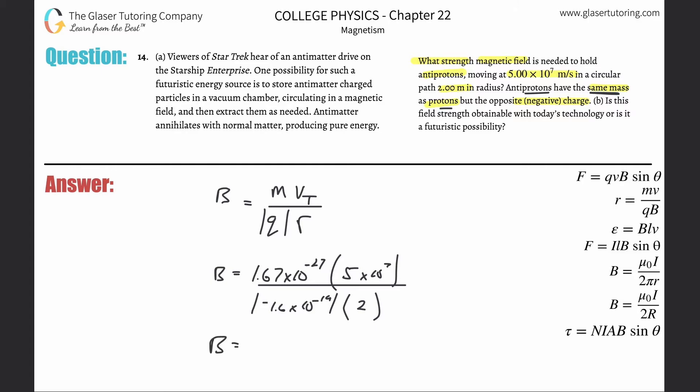And then times the radius, and they gave that to you in meters of two. So there's no conversions necessary. So look, another plug and chug, as they call it. 1.67 times 10 to the minus 27th, multiplied by five times 10 to the seventh, divided by now parenthesis, 1.6 times 10 to the minus 19th is the absolute value. So it's just going to be positive multiplied by two.